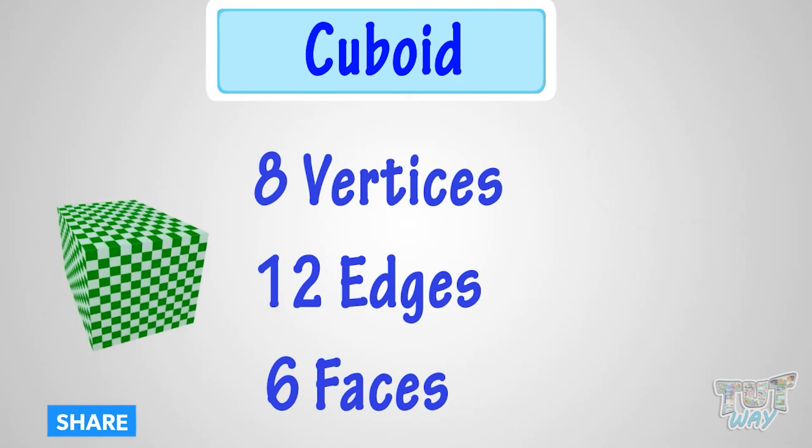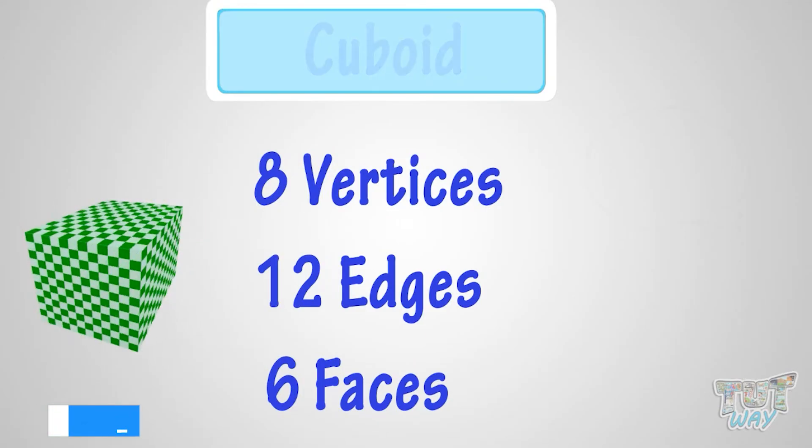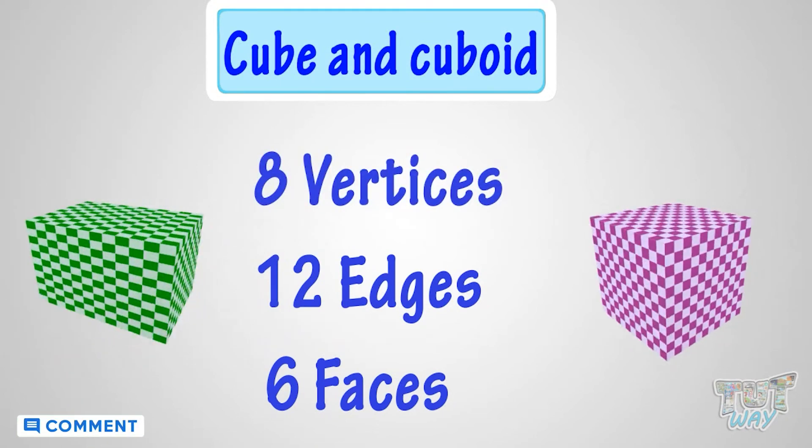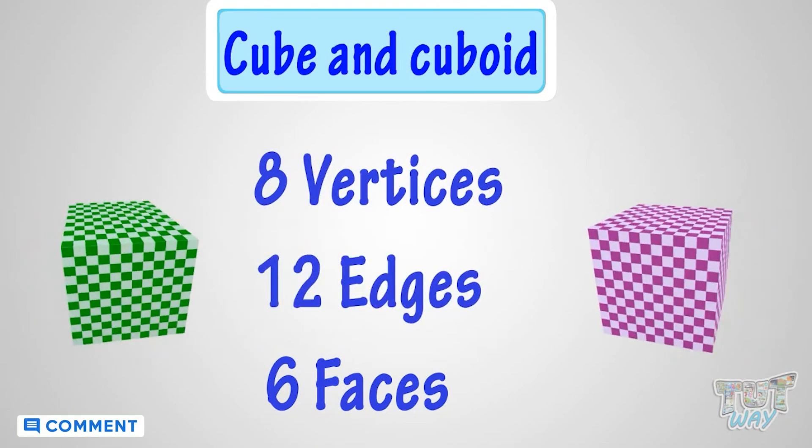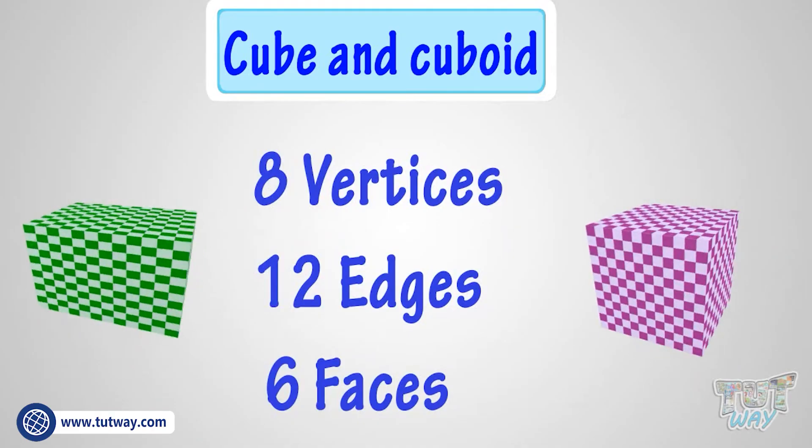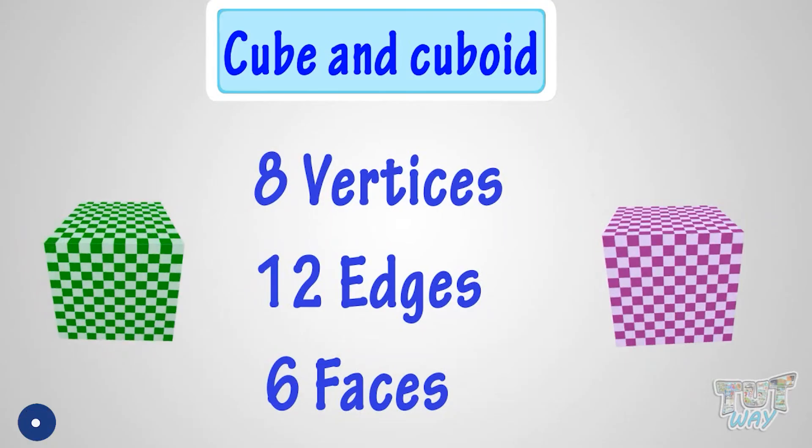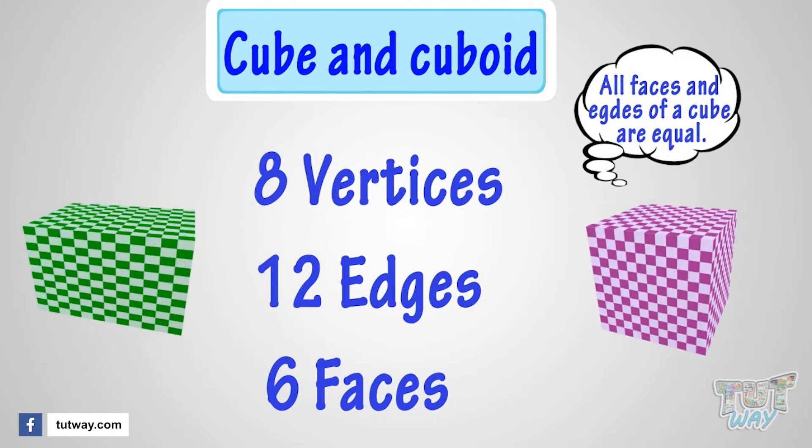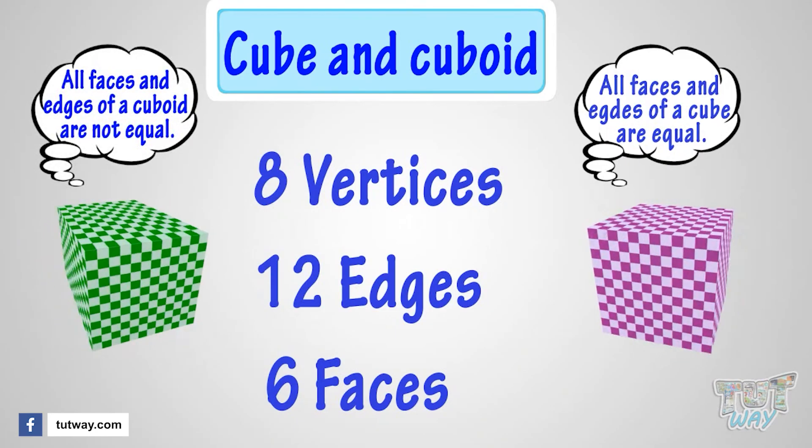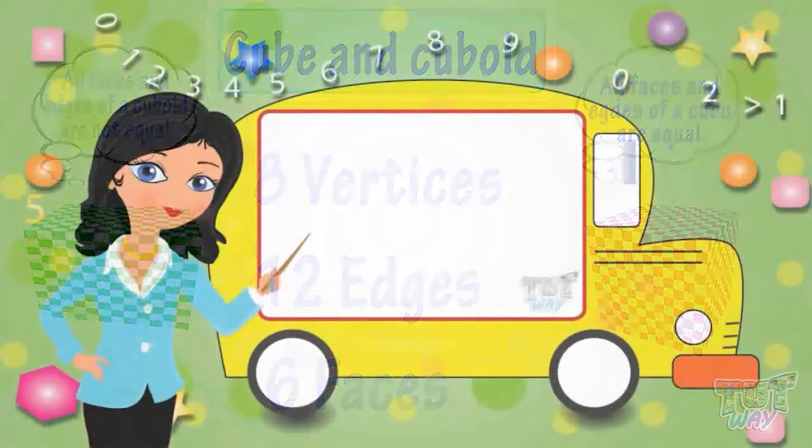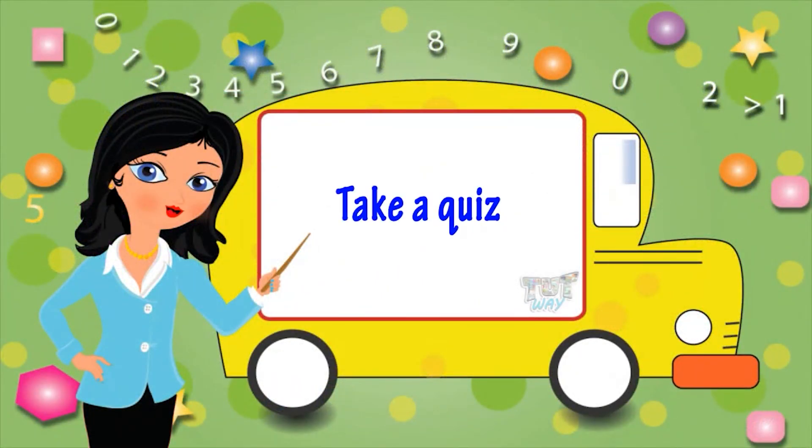We have also learned that both cube and cuboid have 8 vertices, 12 edges, and 6 faces. Only difference is that a cube has all edges and faces equal, but not in the case of a cuboid. Nice! Now, go ahead and take a quiz to see your progress. Bye-bye!